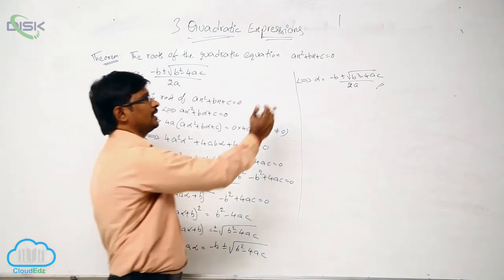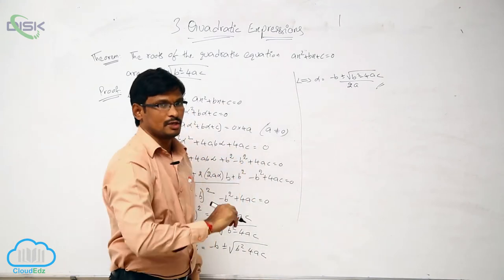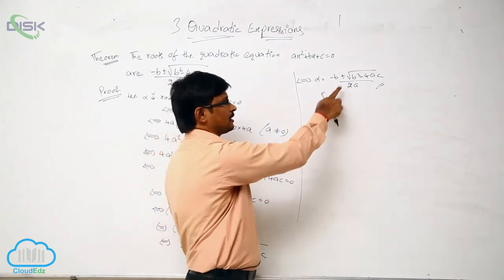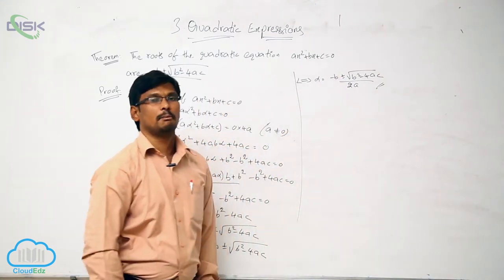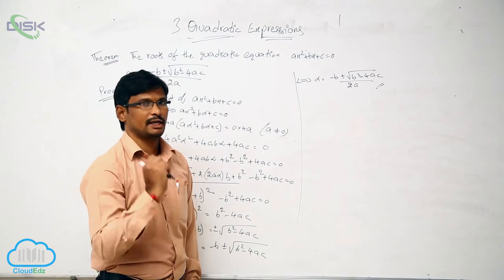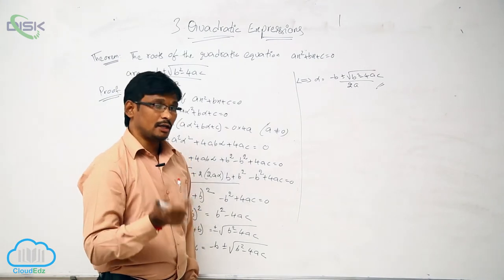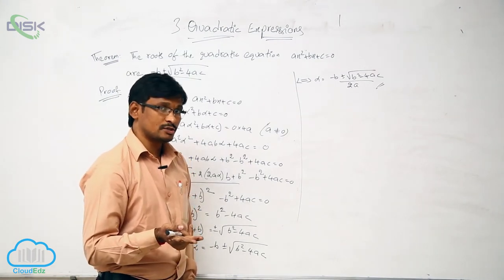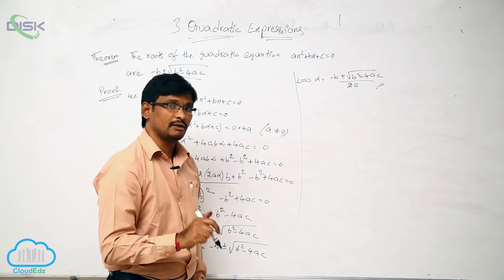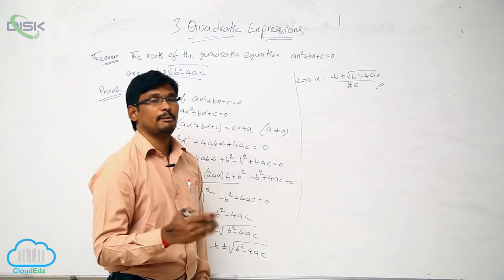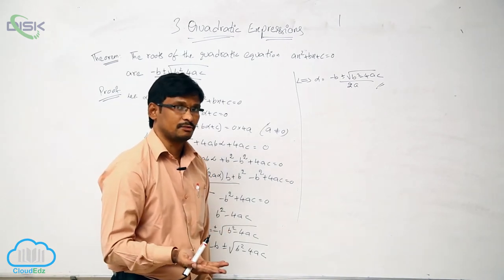How many roots will we get? Since it is a quadratic, we get 2 roots — one with the plus sign and one with the minus sign. These 2 roots may be equal, may be different, or may be imaginary.